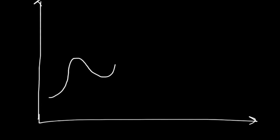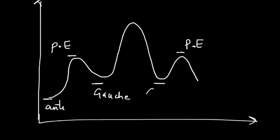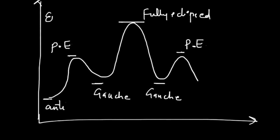If we plot an energy diagram for all the conformations of butane, the lowest energy belongs to the anti conformation. The two intermediate hills represent the partially eclipsed conformations, the lower valleys represent the gauche forms which are more stable, and the topmost peak — the highest in energy — is for the fully eclipsed form. This is the energy diagram for butane's conformations.